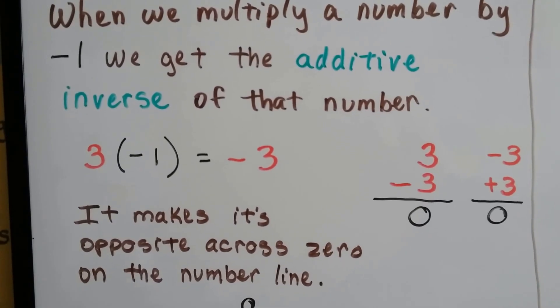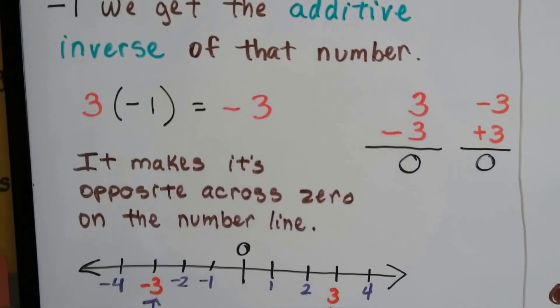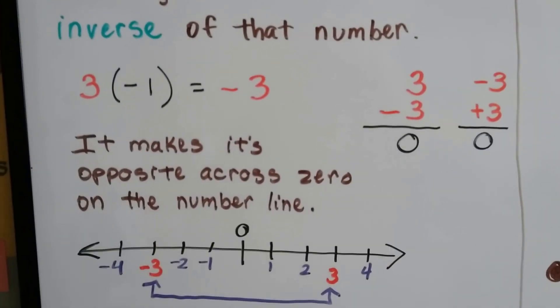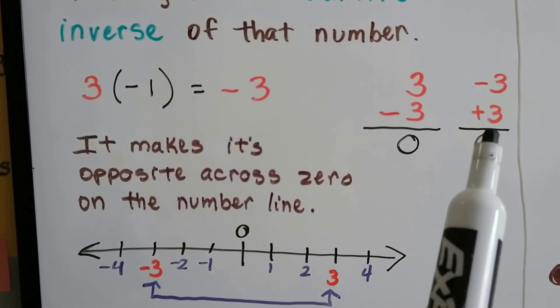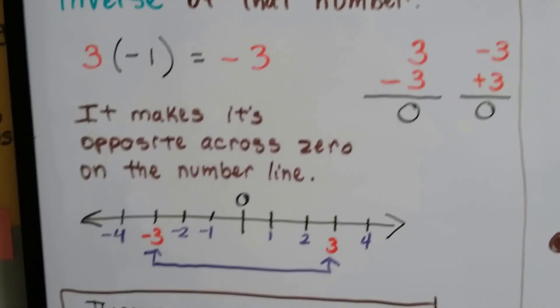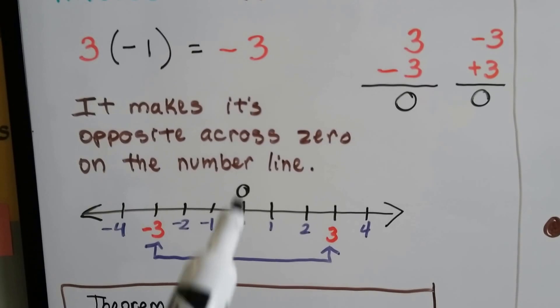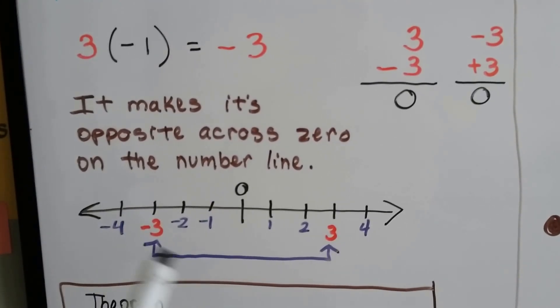It makes its opposite across 0 on a number line. When we have a 3 and we add negative 3, we get 0. And we have negative 3 and we add 3, we get 0. They're just opposites, almost as if the 0 is a mirror and it's reflecting its opposite.